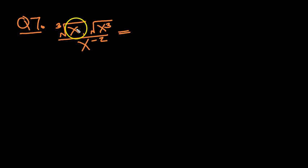So here, cube root of x is just x to the power of one-third as an index. And the square root of x cubed, square root is power of a half, so it's x cubed to the power of a half, all divided by x to the minus 2.